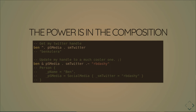The real power comes from how we can compose these things together. We can say: Ben, I want to view the social media part of my person and then grab the Twitter handle out of that record — and that gets me back `benGalera`. We can also use composition to set — both setters and getters compose. So for these two lenses combined, I take the target and set it to a much cooler username, and we get back the person with just that Twitter handle updated.